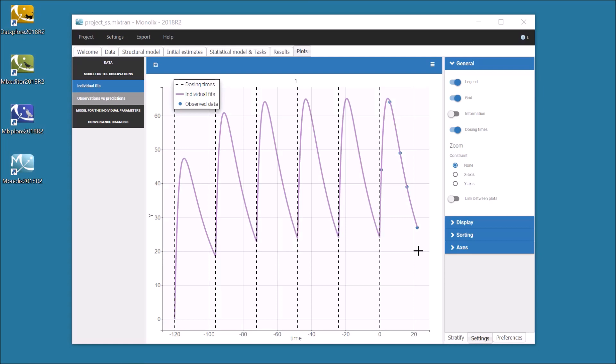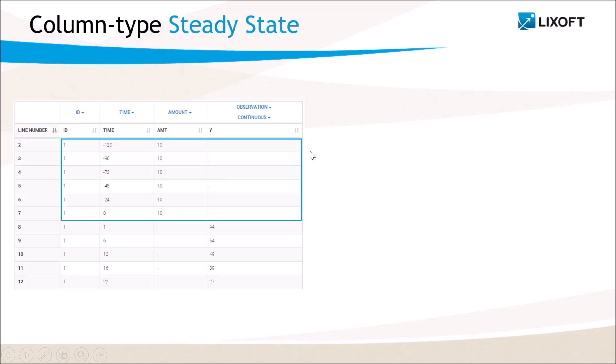In this case, it is more convenient to define the multiple doses based on the time of the last dose, here zero, with multiple doses before that time that allow to reach a steady state. So one way to encode this would be like the data set here with one line per dose. The dose at site is at time zero, followed by the observations.